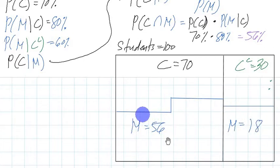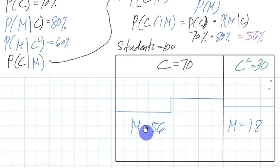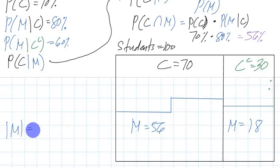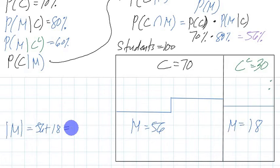The students with mp3 players are those marked in blue. We have 56% of students who have mp3 players with phones, and 18% of students who have mp3s without phones. So the total number of students who have mp3 players is 56 plus 18, which equals 74.